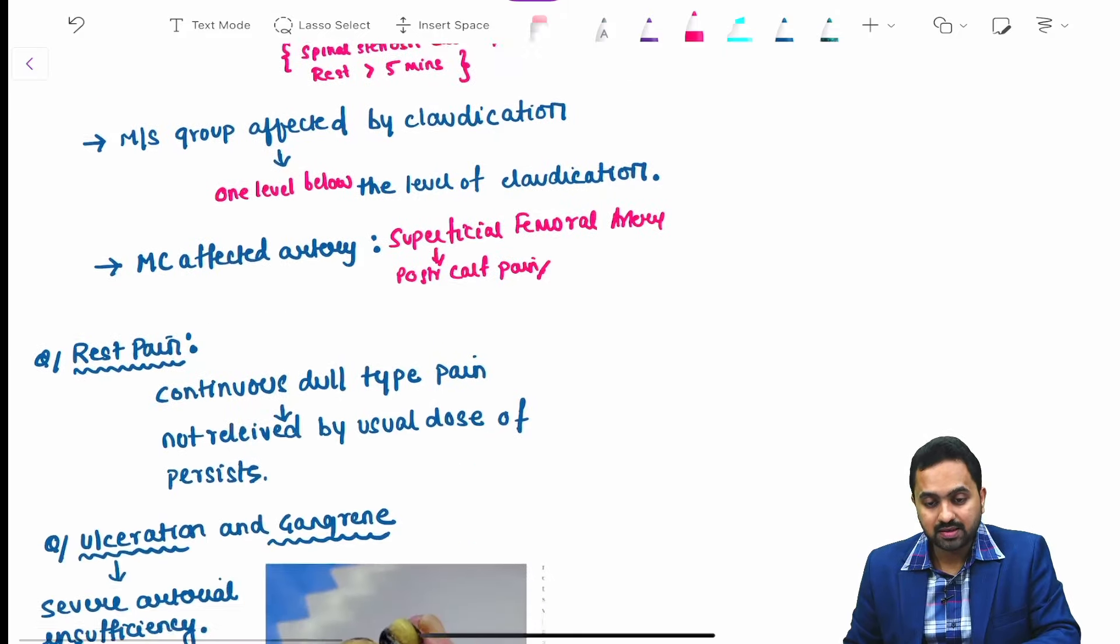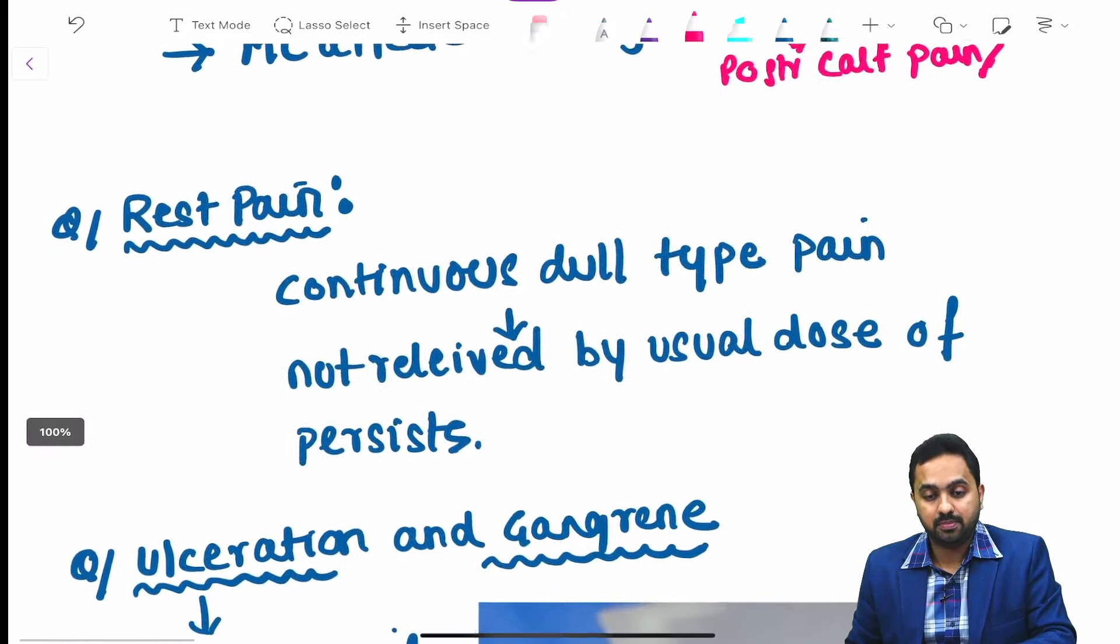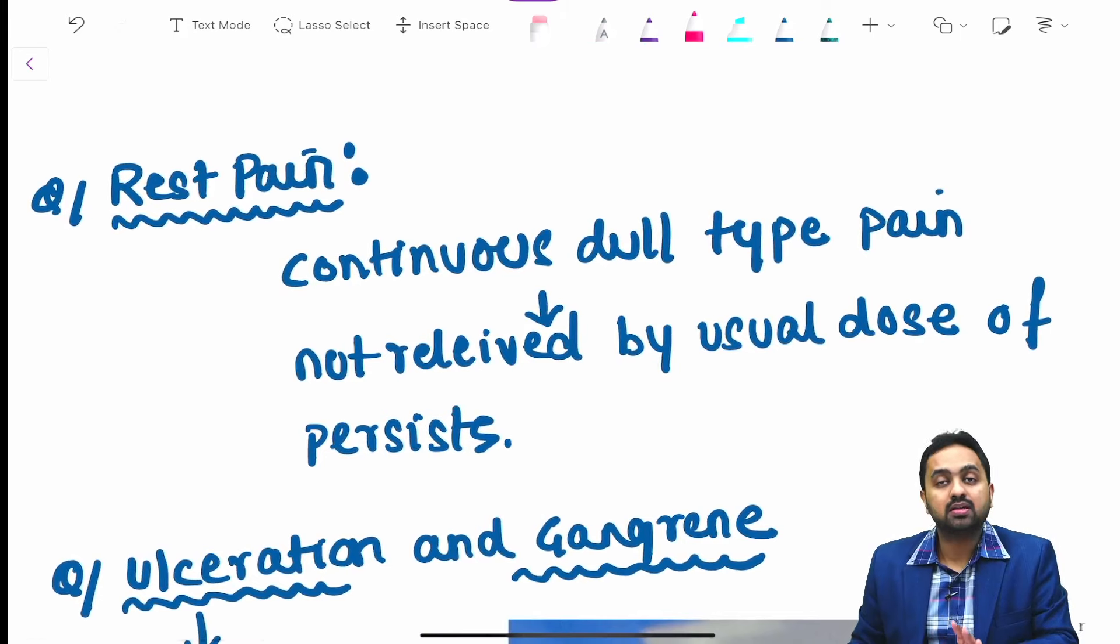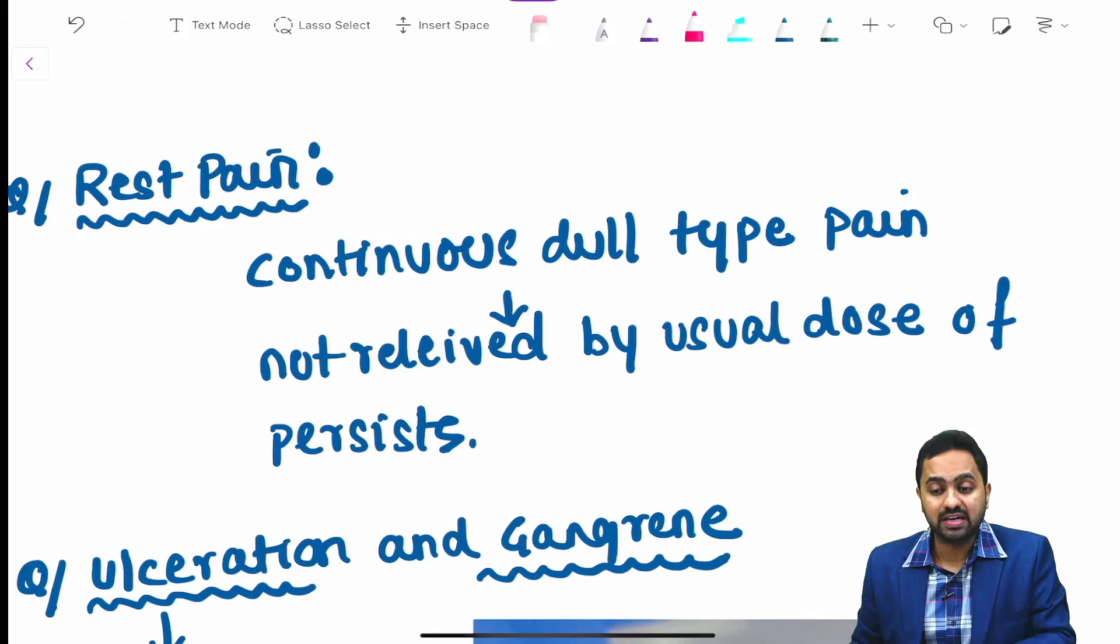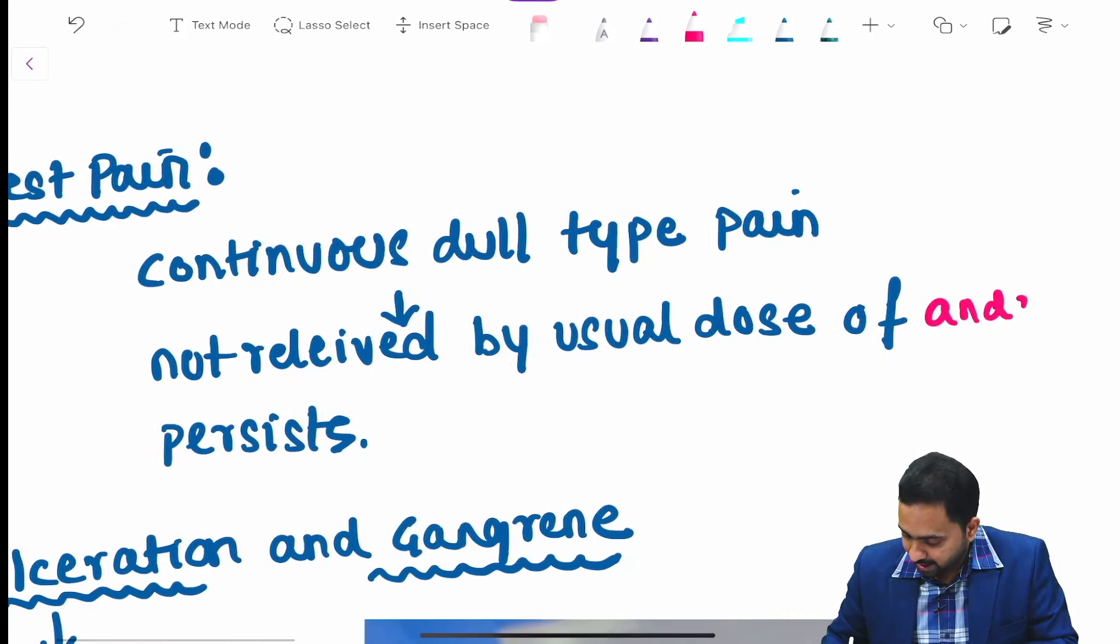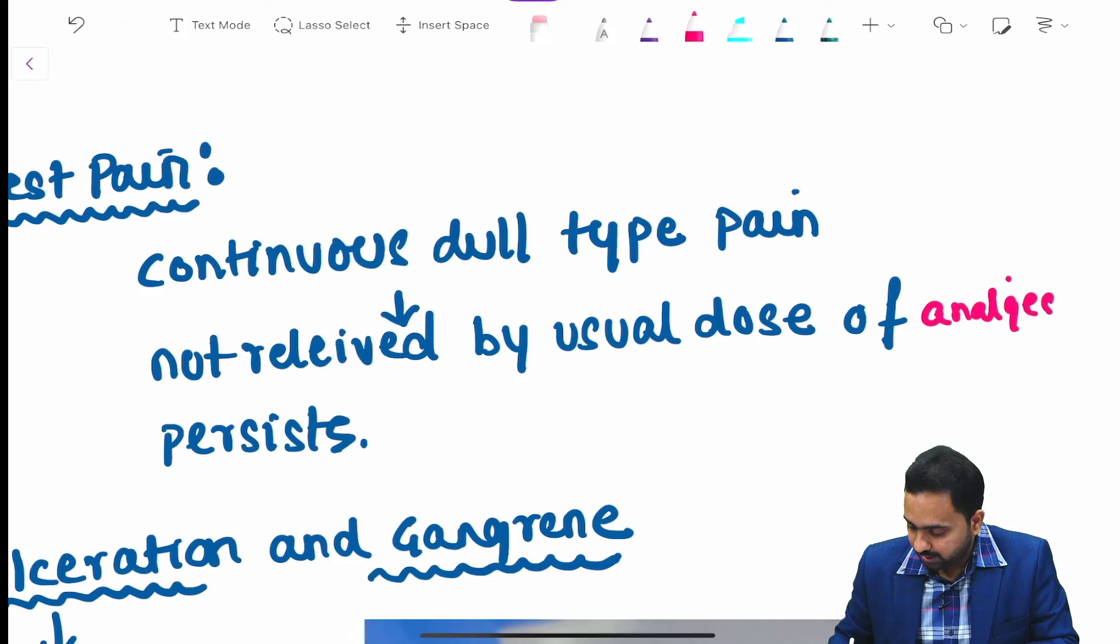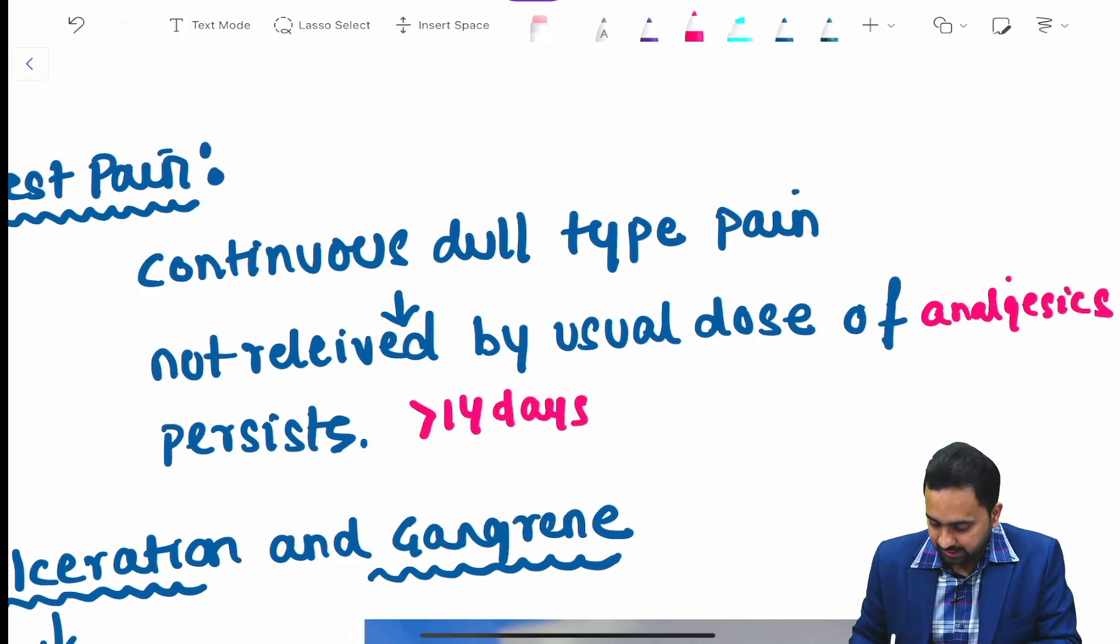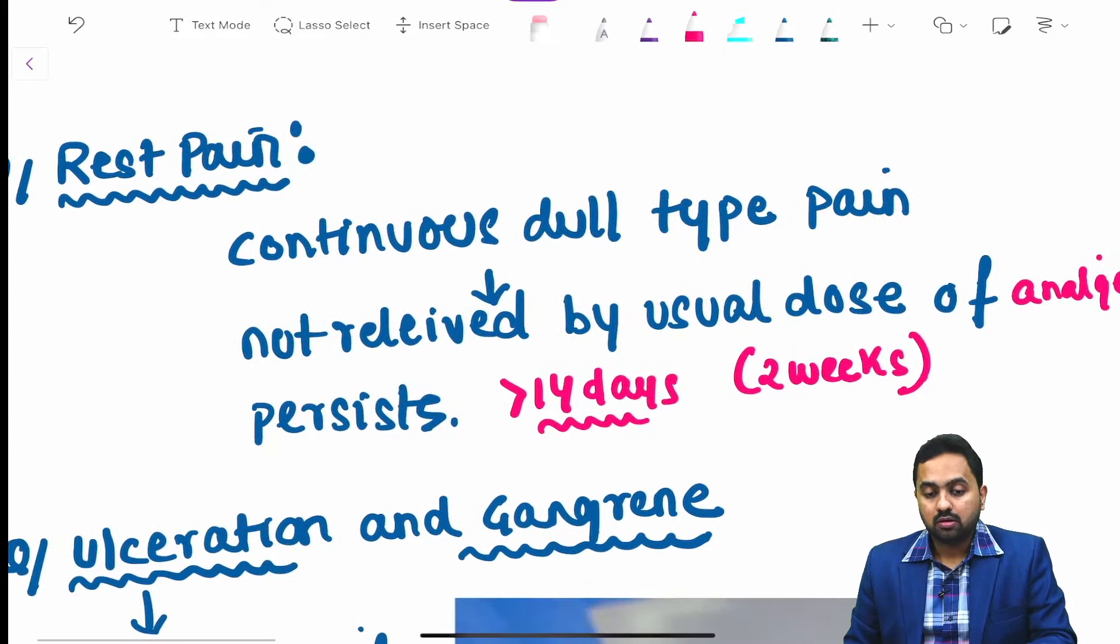Moving to the next concept, rest pain. What is rest pain? It is continuous dull type pain not relieved by the usual dose of analgesics, and this pain usually persists for more than 14 days, that is two weeks.